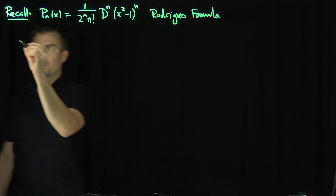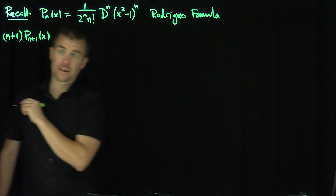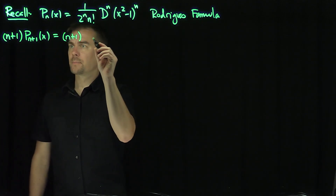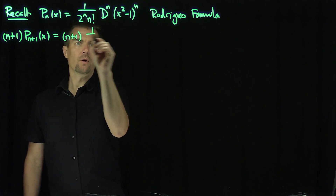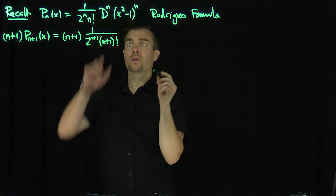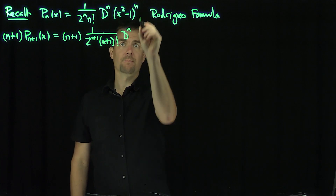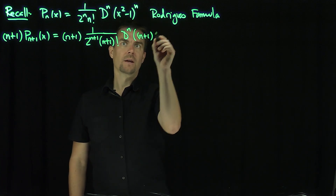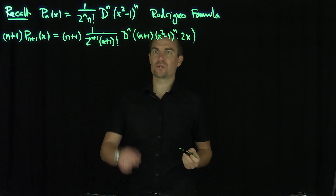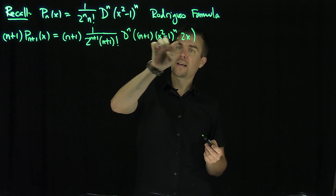What I'm going to do now is look at (n+1) times P_{n+1} of x. By Rodriguez, this equals (n+1) times 1 over 2 to the n+1, (n+1) factorial, and then n+1 derivatives — which is the same as doing n derivatives of the derivative of x squared minus 1 to the n+1. That gives me an n+1, and then x squared minus 1 to the power n, times 2x. So I've replaced x squared minus 1 to the n+1 by putting one derivative on it first.